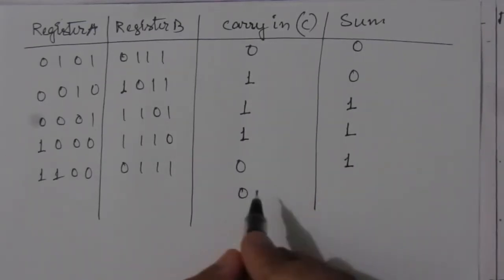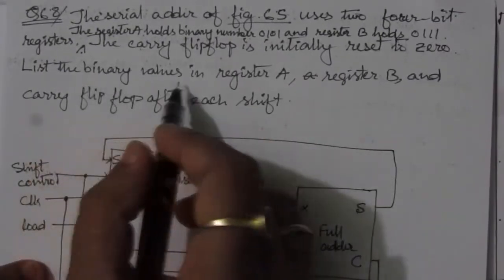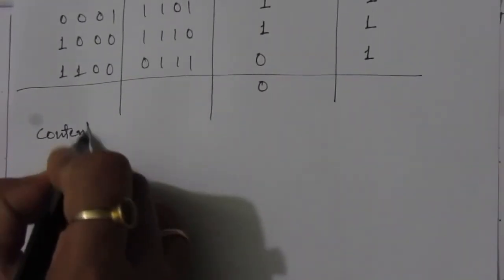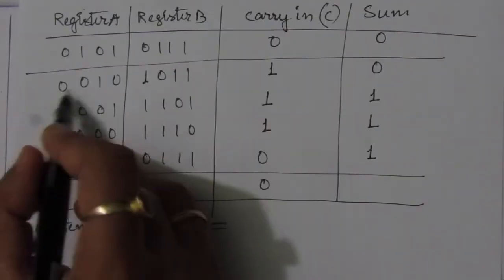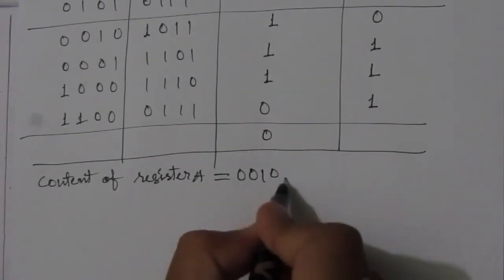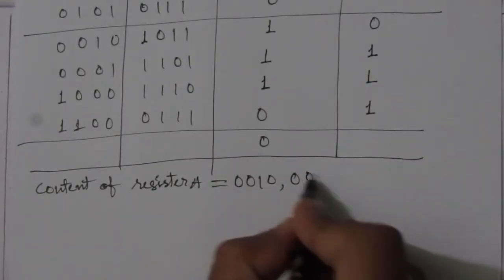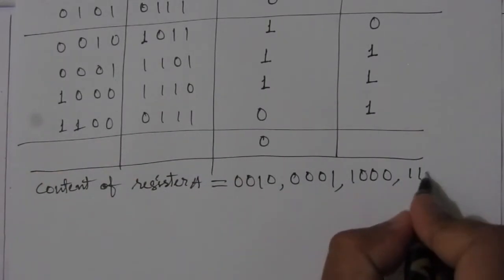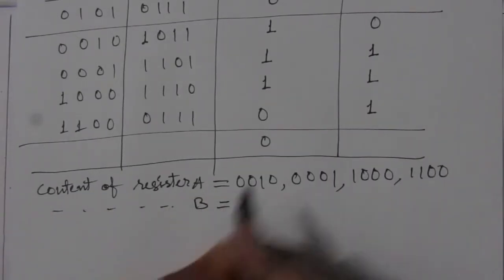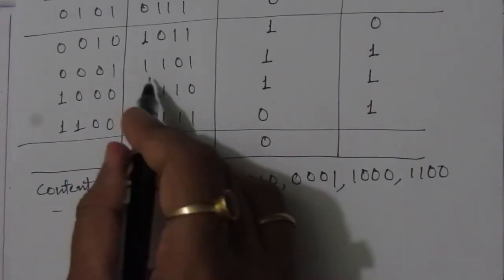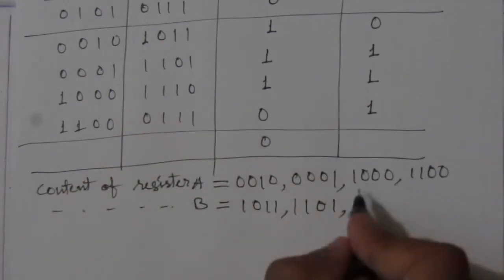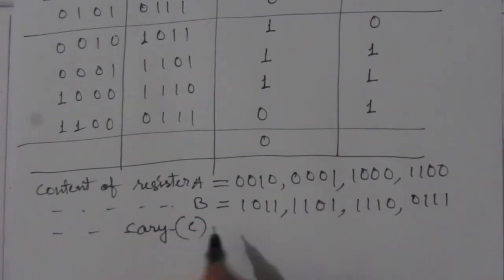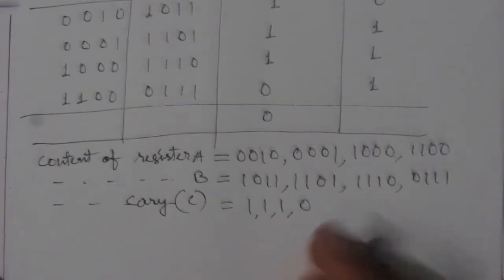Summarizing the results: content of register A after each shift is 0010, 0001, 1000, 1100. Content of register B after each shift is 1011, 1101, 1110, 0111. Content of carry C after each shift is 1, 1, 1, 0. This is the solution of problem number 6.8.